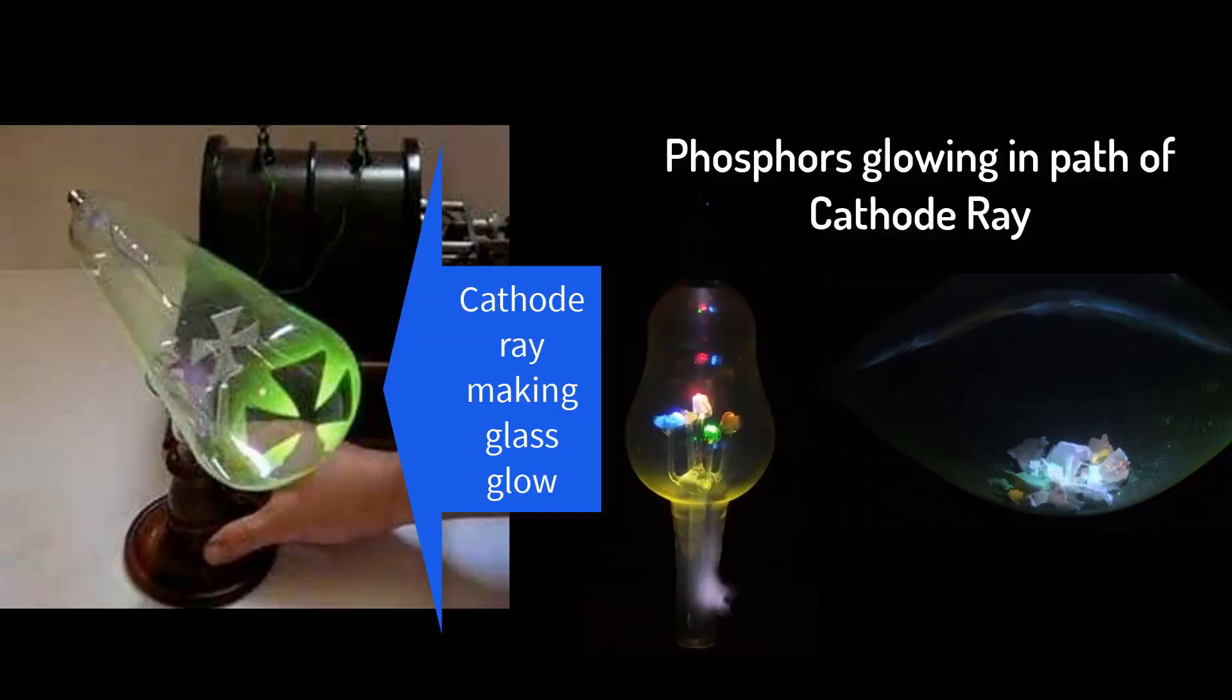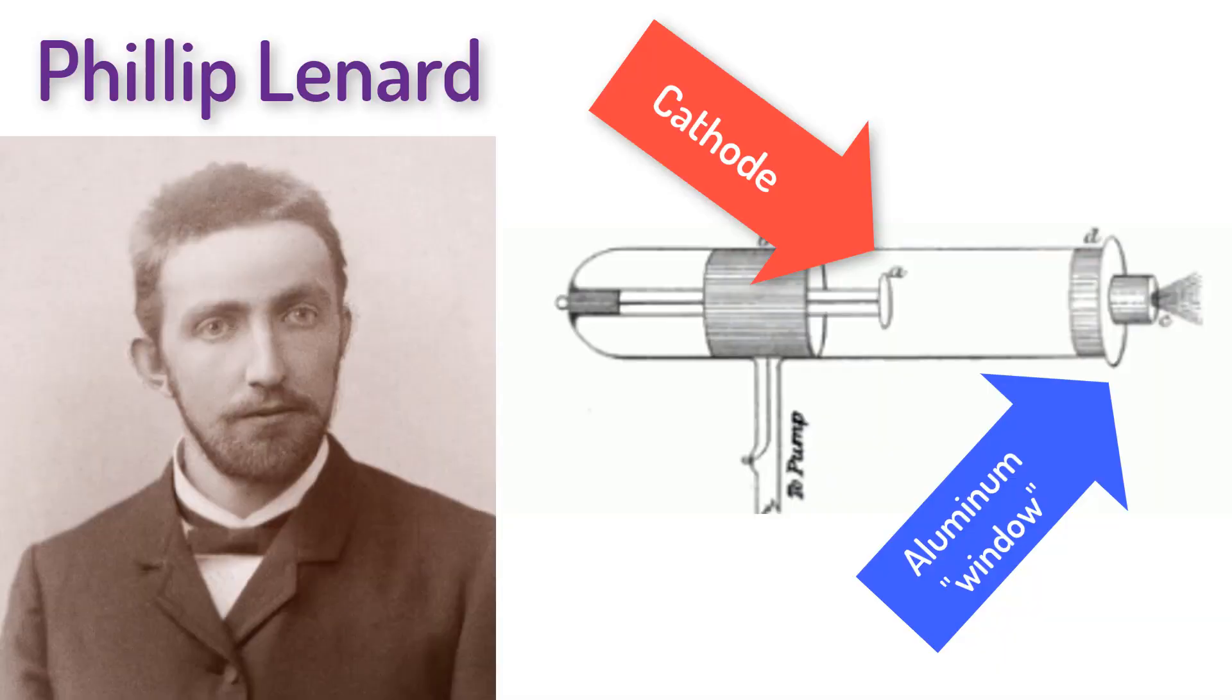Actually, the cathode ray had been discovered 26 years previously and are invisible rays that emanate from the negative electrode of a vacuum tube and can make glass and phosphors glow. In 1892, Heinrich Hertz discovered the cathode rays could go through thin pieces of aluminum, and two years after that, his assistant Philip Leonard made a tube with an aluminum window that let the cathode rays escape the tube entirely. Leonard found he could get a phosphorous plate to glow a few inches from his tube and he could even see electrical effects up to 30 centimeters away.